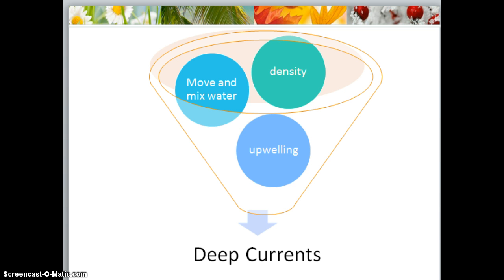Upwelling is when cold water is brought up from the deep ocean. The deep water comes in contact with the shore, circulates, and returns back down. It is a movement of cold water upward from the deep ocean — winds blow away the warm surface water and cold water comes up to replace it. Upwelling is important because it brings tiny organisms, minerals, and other nutrients from the deep layers of the ocean to different areas where they are needed.